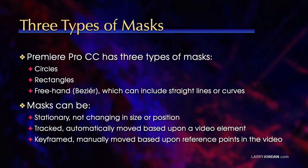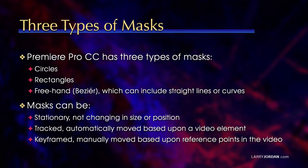Premiere has three types of masks: circles and rectangles and freehands, and you've seen me working with them already. Masks can be stationary, not changing in size or position, which is what we use to isolate on a particular something white or something gray or skin. Or they can be tracked and automatically moved based upon a video element, or keyframed and manually moved based upon reference points in the video.